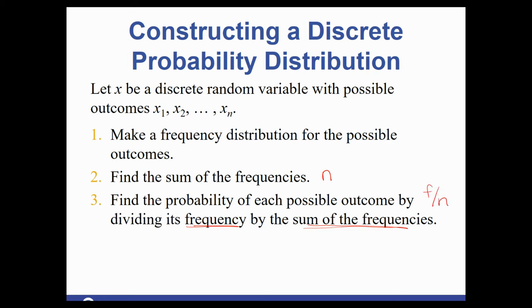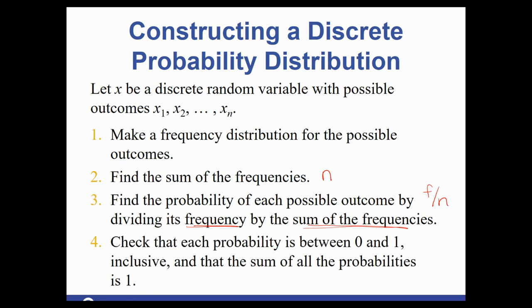And so we abbreviate that as f divided by n. So each individual frequency divided by the total, this would represent your probability. So P(x) is equal to that f over n. And you would check to make sure each one is between zero and one. Again, it could be both zero or one as well. And that all of them would add up to one.